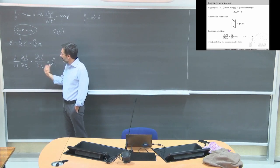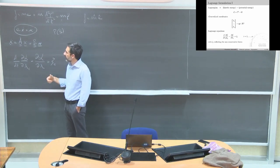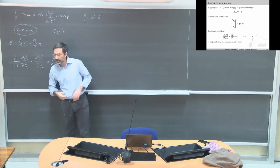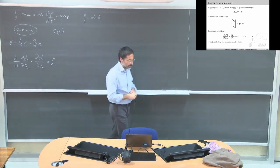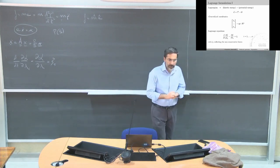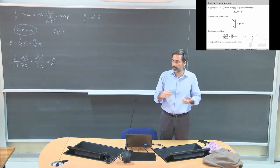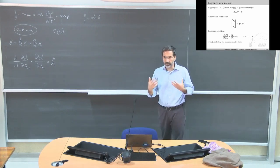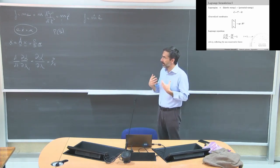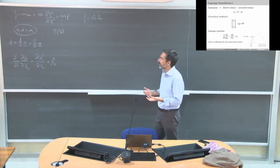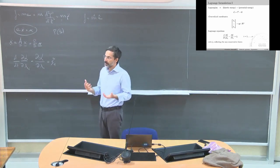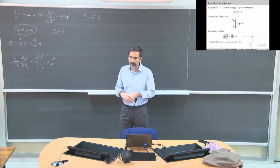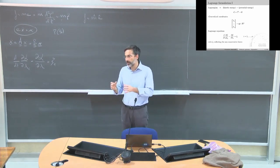I need to introduce the concept of generalized coordinates. Generalized coordinates are any set of coordinates that uniquely represents the system configuration. For us now, we can consider the joint positions as generalized coordinates: when I have the N joint positions, I know my robot configuration.